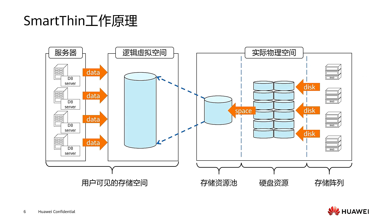Let's take a look at the working principle of SmartThin. The key lies in the virtualization of storage resources. As shown in this picture, this is the physical space in the real machine. Disks in the storage array form a storage resource pool, which is then mapped for our server to use. However, for the host, when we present storage space to the user, it presents a logical virtual space. We use SmartThin to create a ThinLun, which will not pre-allocate all the space.